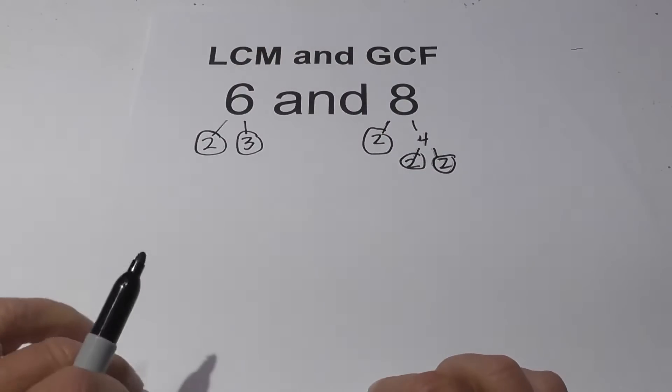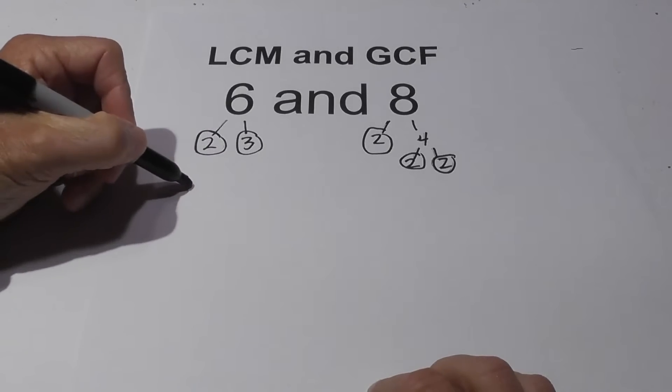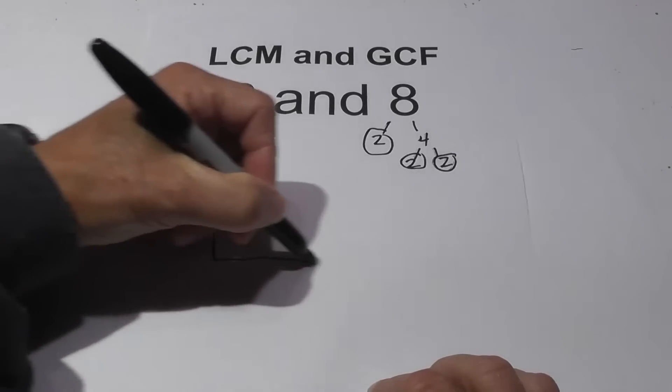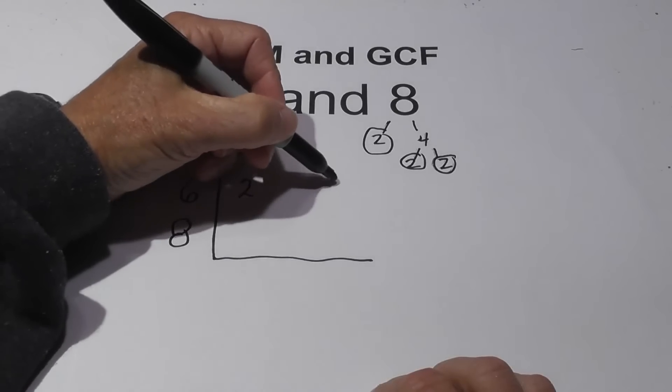Now, I've found this technique is really easy and works for me. Next I create a little chart for 6 and 8 and I write down their prime numbers. So I'm going to write a 2 and a 3.